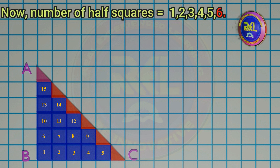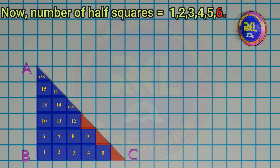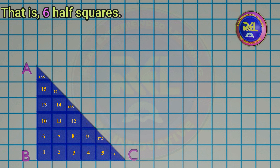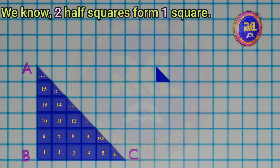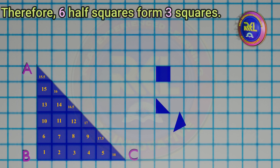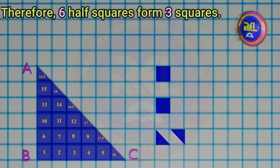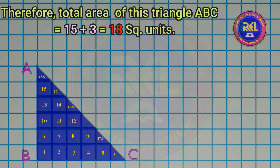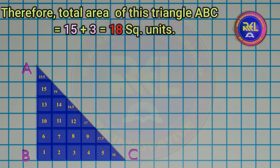Now, the number of half squares is equal to 6. We know 2 half squares form 1 square. Therefore, 6 half squares form 3 squares. Therefore, total area of this triangle A, B, C is equal to 15 plus 3, which equals 18 square units.